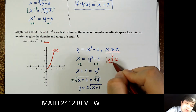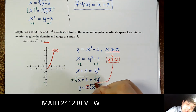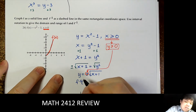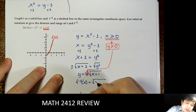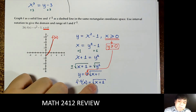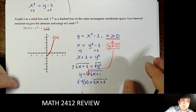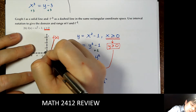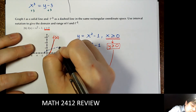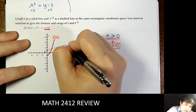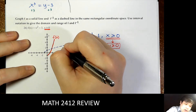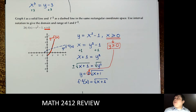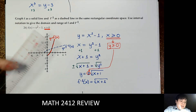If y is greater than or equal to 0, we choose the plus side. So f inverse of x equals the square root of x plus 1, which is the square root graph shifted one unit to the left. We draw it as a dashed line. The graph of the function and its inverse are symmetric about the line y equal to x.